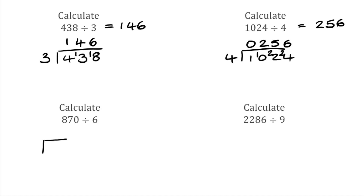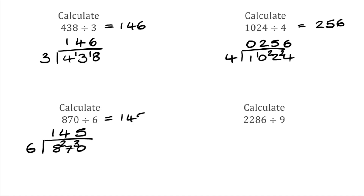Moving on to the next question, we have 870 divided by 6. How many 6s fit into 8? That would be 1, with the remainder of 2. We then do how many 6s fit into 27 — that would be 4, because 6 times 4 is 24, leaving a remainder of 3. And finally, 6s into 30 go 5 times. So our final answer is 145.